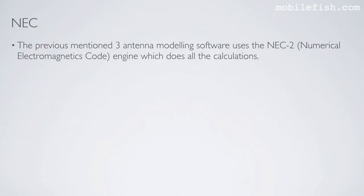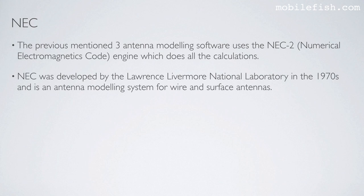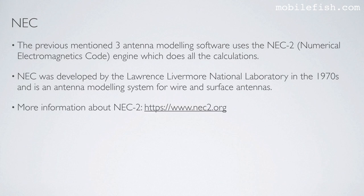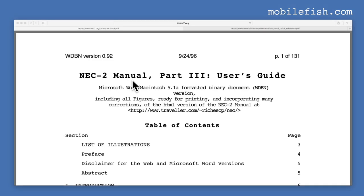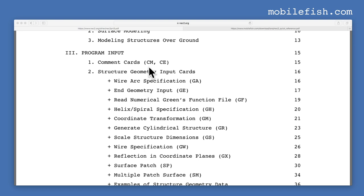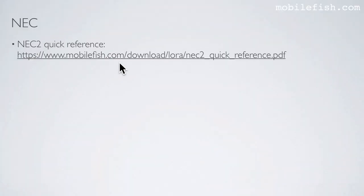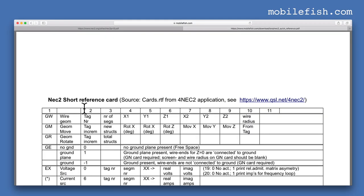All three of the previously mentioned antenna modeling software tools use the NEC2 engine, which does all the calculations. NEC was developed by the Lawrence Livermore National Laboratory in the 1970s and is an antenna modeling system for wire and surface antennas. The NEC2 documentation is composed of 3 sections: Part 1 is the NEC program description explaining the theory, Part 2 explains the code, and Part 3 is the NEC user's guide — which is the documentation you need. You can also find the NEC2 quick reference in the 4NEC2 application.